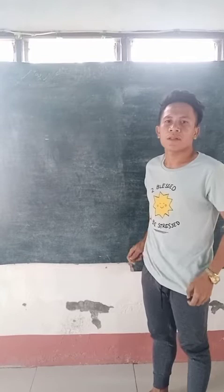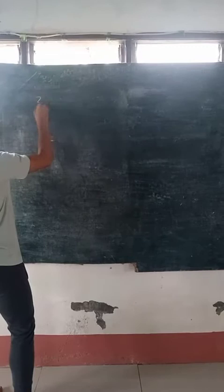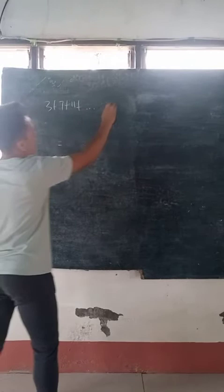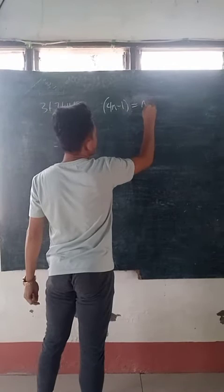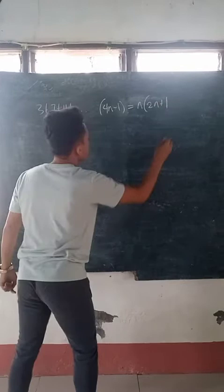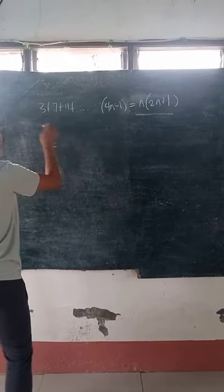Good day everyone. This video is helping us on how to solve a principle of mathematical induction. So if the problem is 3 plus 7 plus 11 plus 4n minus 1, is equal to n times 2n plus 1. So now we will see the first term is equal to 2n plus 1.